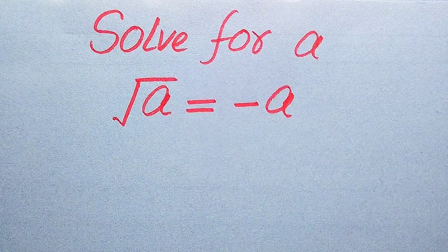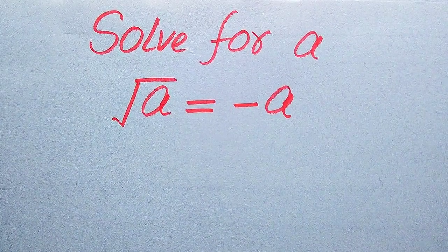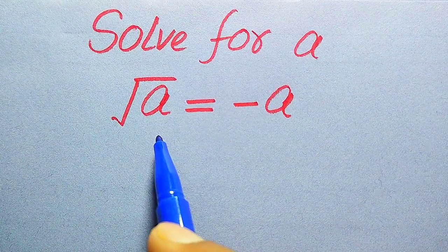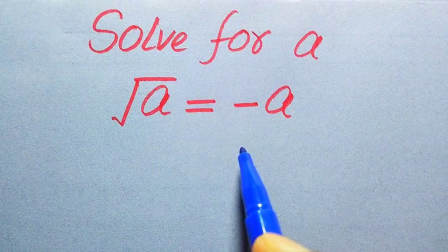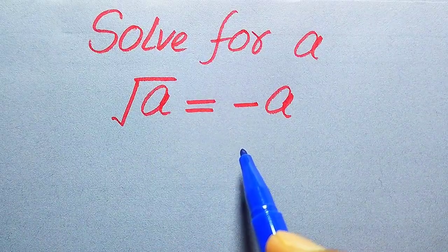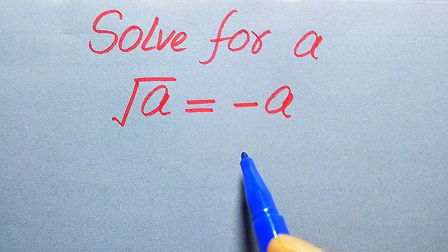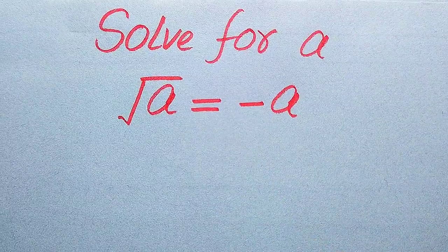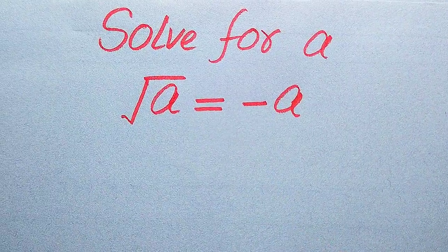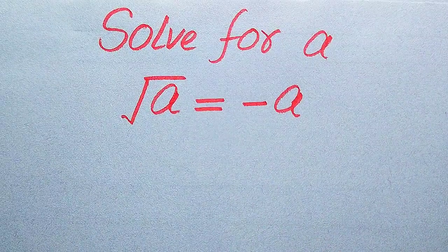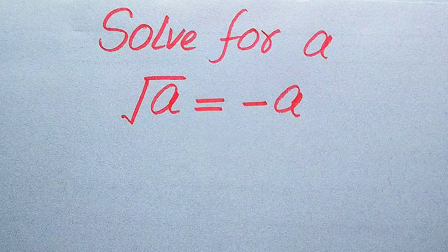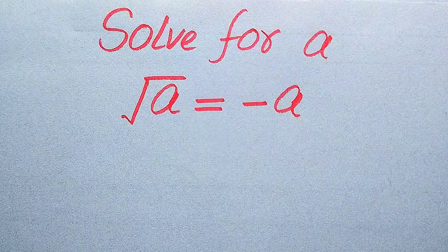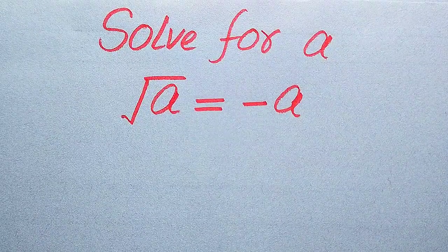Hello everyone. How to solve this problem for the values of A if we have square root of A equals minus A, and we solve this problem for all the values of A. Here we need to find all the roots of this equation, and at the last we will verify which of the roots are solutions and which of the roots are extraneous roots.